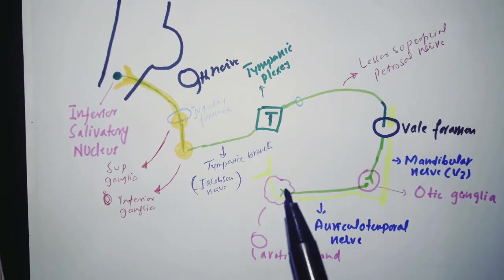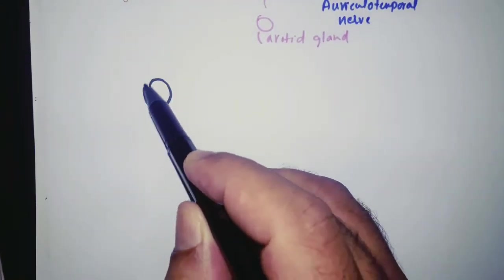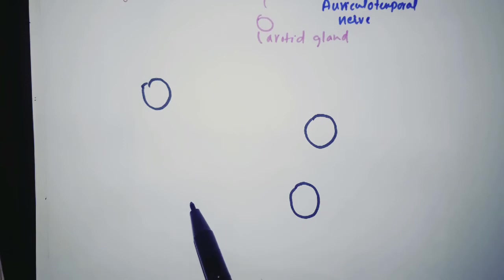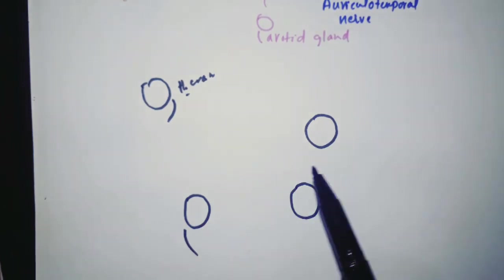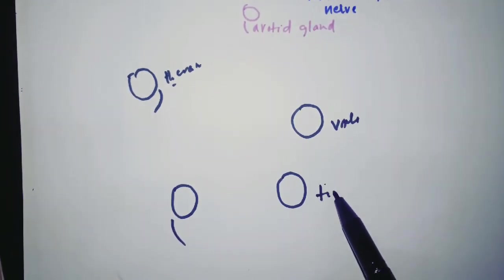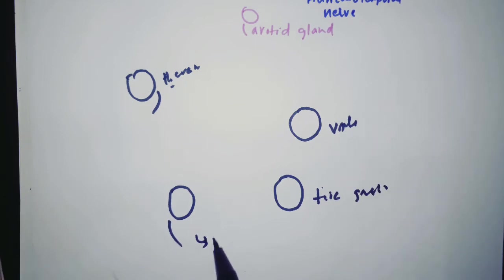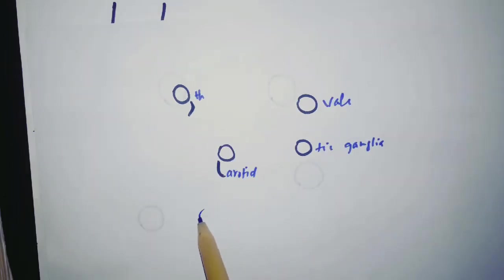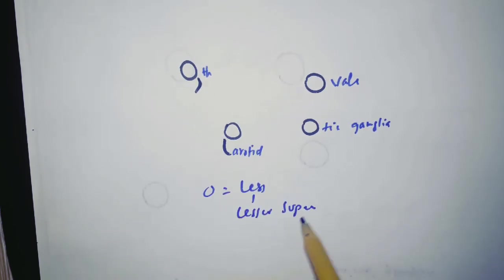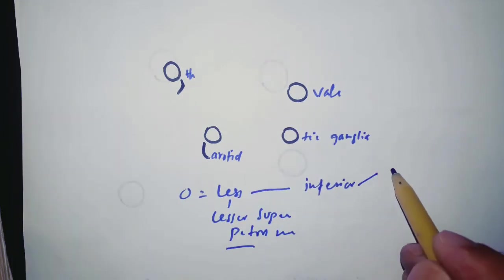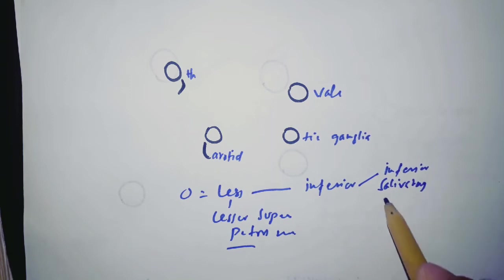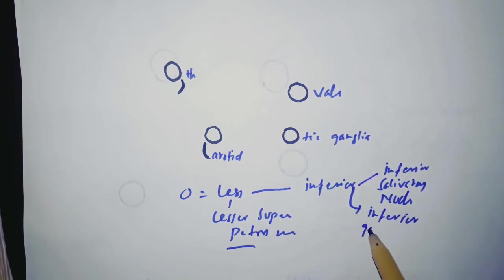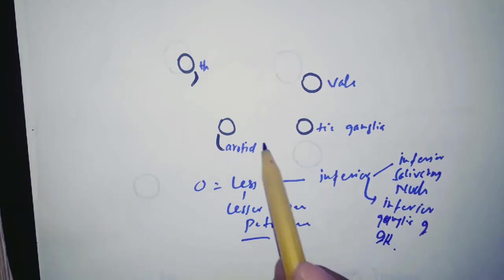Let's discuss the otic ganglia pathway for the parotid gland. To make it easy, draw a four and a zero — making this one a nine and this a P — so this is for cranial nerve nine, the glossopharyngeal nerve. This is for foramen ovale, this is for otic ganglia, and this is for the parotid gland. Zero is less, meaning lesser superficial petrosal nerve, and lesser can also be called inferior, so this is the inferior salivatory nucleus and the inferior ganglia of cranial nerve nine.